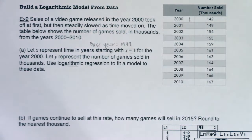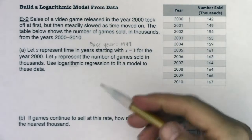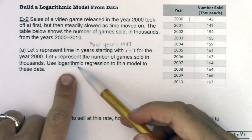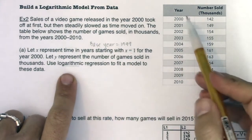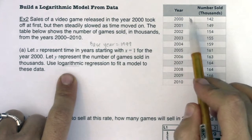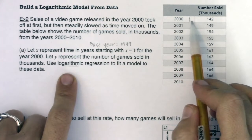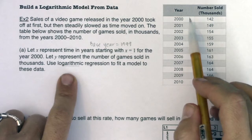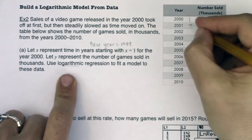You might be thinking: why didn't they just set 2000 to be year zero? Well, we're doing a logarithmic regression, and you can't take the log of zero or a negative number. So we're going to set our starting x value at one.